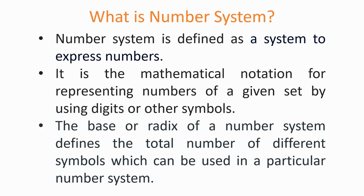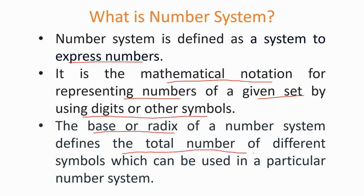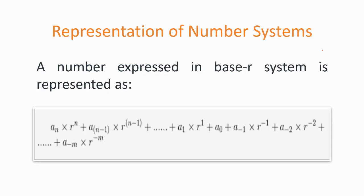Firstly, what is a number system? It is a system used to express numbers — the mathematical notation for representing numbers using a given set of digits or other symbols. For any number system there is a base or radix, which defines the total number of different symbols that can be used. For example, in the decimal number system the base is 10, so we can use digits from 0 to 9. For any number system with base R, the digits range from 0 to R minus 1.